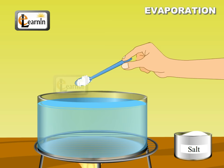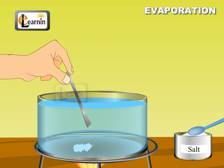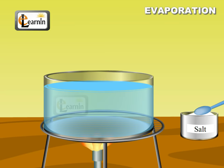Add some spoons of salt to water in another beaker and stir it well. The salt gets dissolved. Now heat the salt solution. The water gets evaporated, leaving the salt behind.